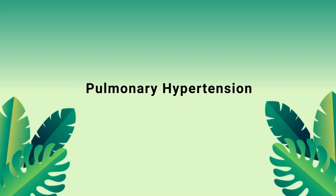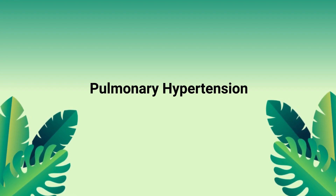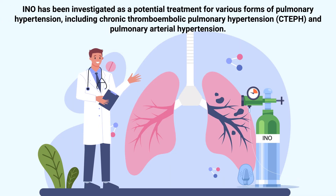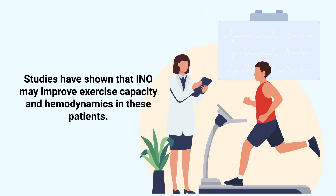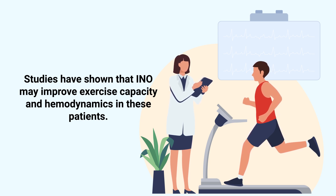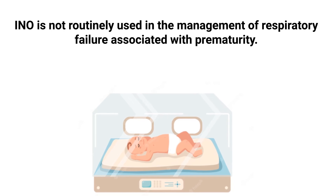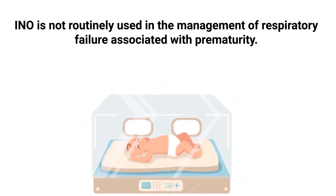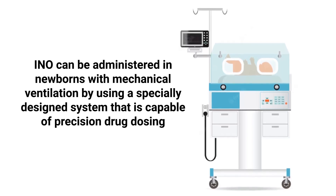Since iNO is a selective pulmonary vasodilator, it may be helpful in treating patients with pulmonary hypertension. It has been investigated as a potential treatment for various forms of pulmonary hypertension, including chronic thromboembolic pulmonary hypertension and pulmonary arterial hypertension. Studies have shown that inhaled nitric oxide may improve exercise capacity and hemodynamics in these patients. At this time, inhaled nitric oxide is not routinely used in the management of respiratory failure associated with prematurity.